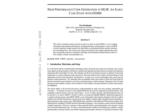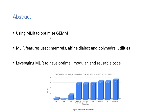The paper goes through these optimizations using matrix multiplication as the main use case. The MLIR features used are memrefs, affine dialects, and polyhedral utilities. Polyhedral methods are very good for finding an optimal schedule for nested for-loops.